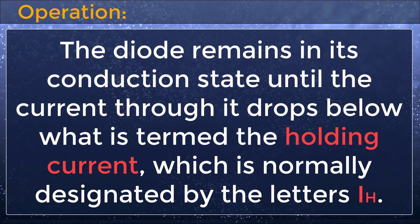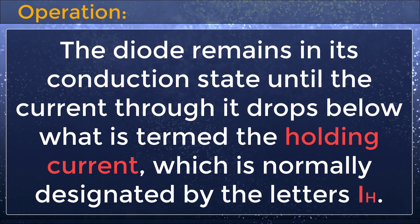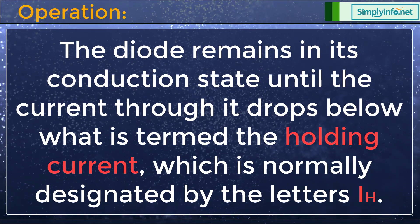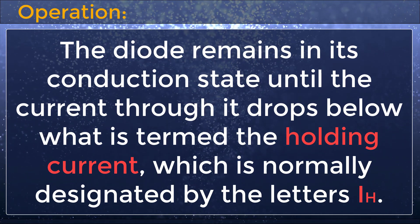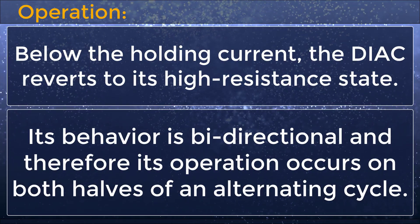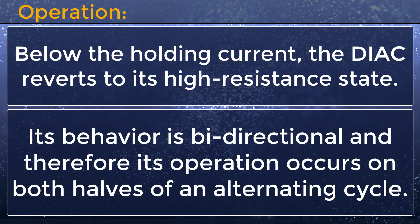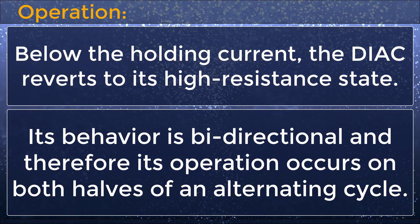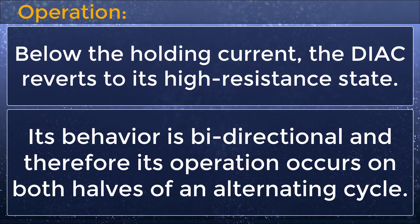The diode remains in its conduction state until the current through it drops below what is termed the holding current, normally designated IH. Below the holding current, the DIAC reverts to its high resistance state. Its behavior is bi-directional, and therefore its operation occurs on both halves of an alternating cycle.